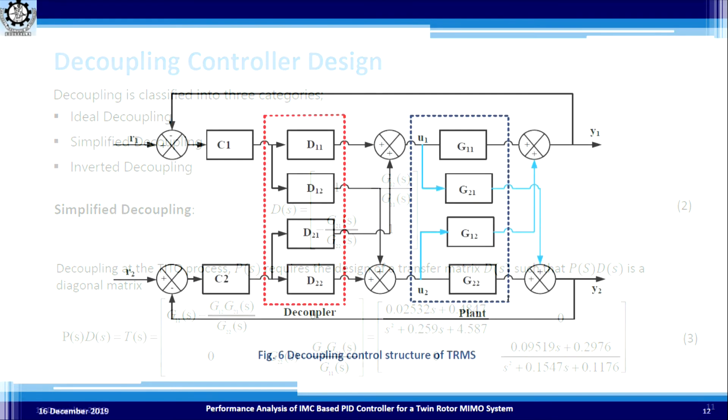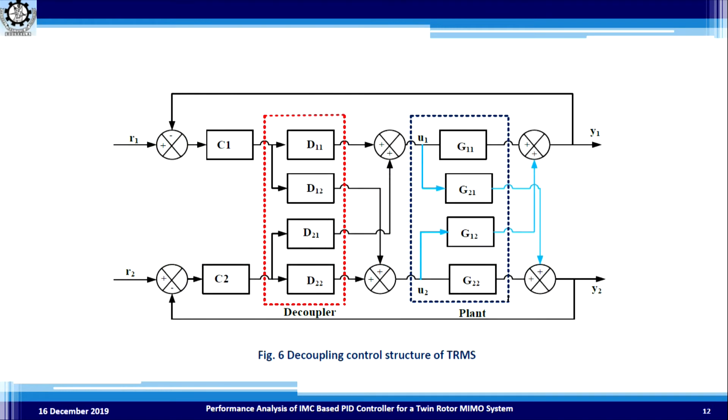The resulting T(s) gives the two decoupled transformations. This is the decoupling control structure of the Twin Rotor MIMO System — showing the plant, the decoupler part, and their combination forming T(s).